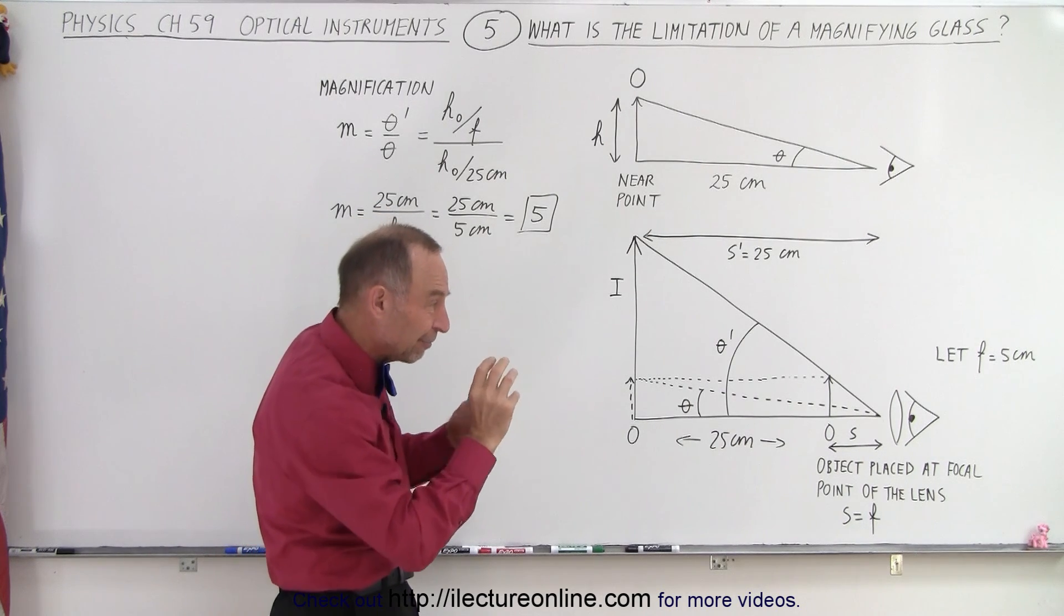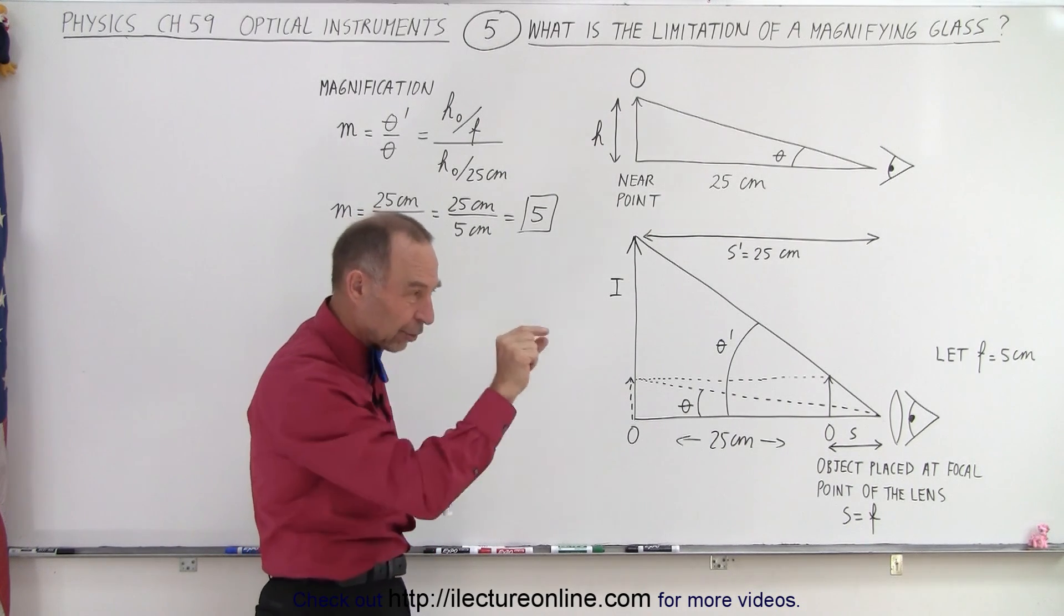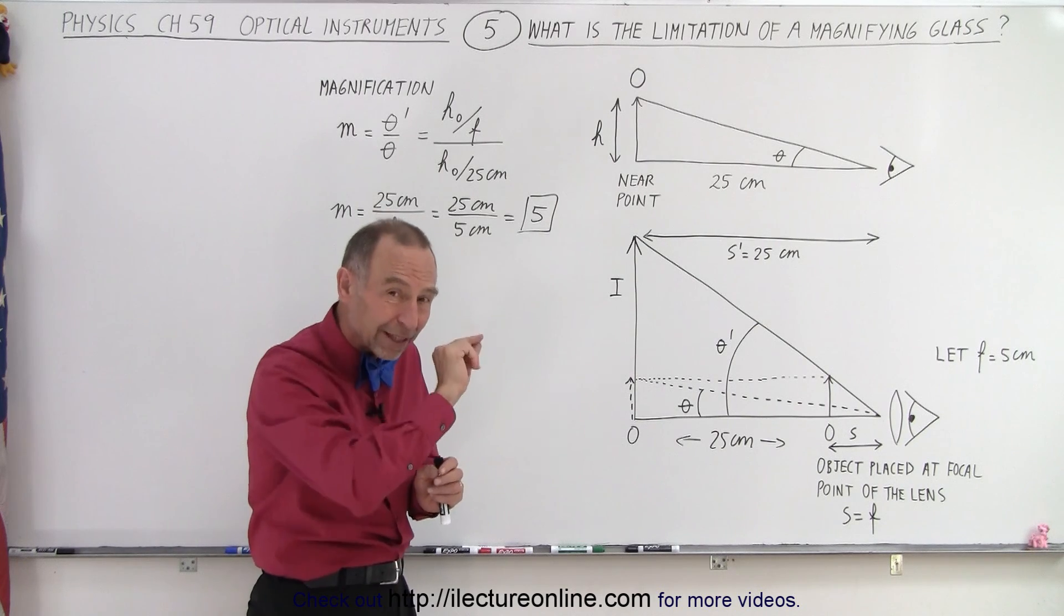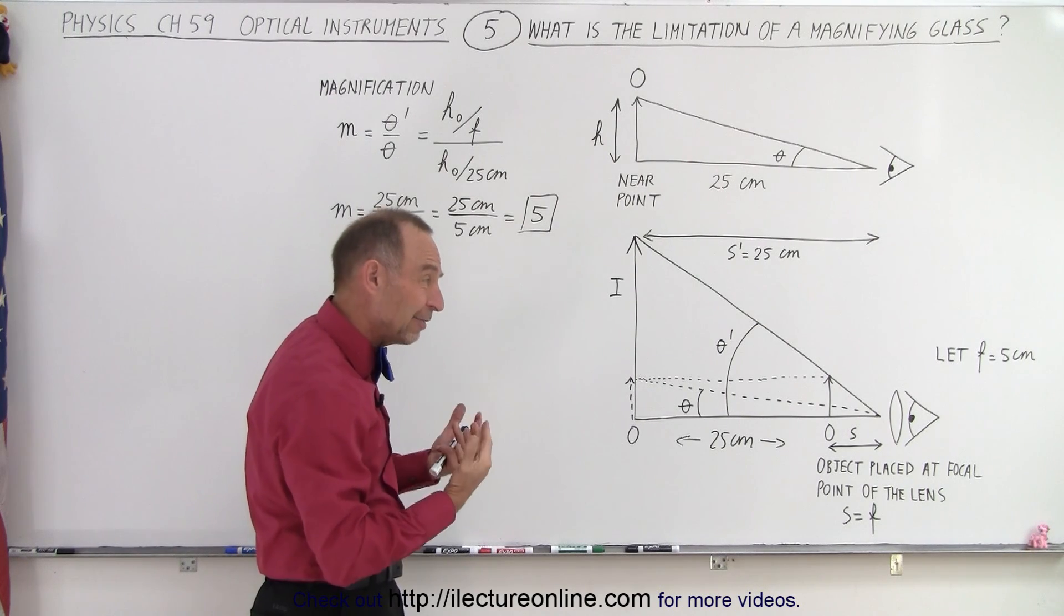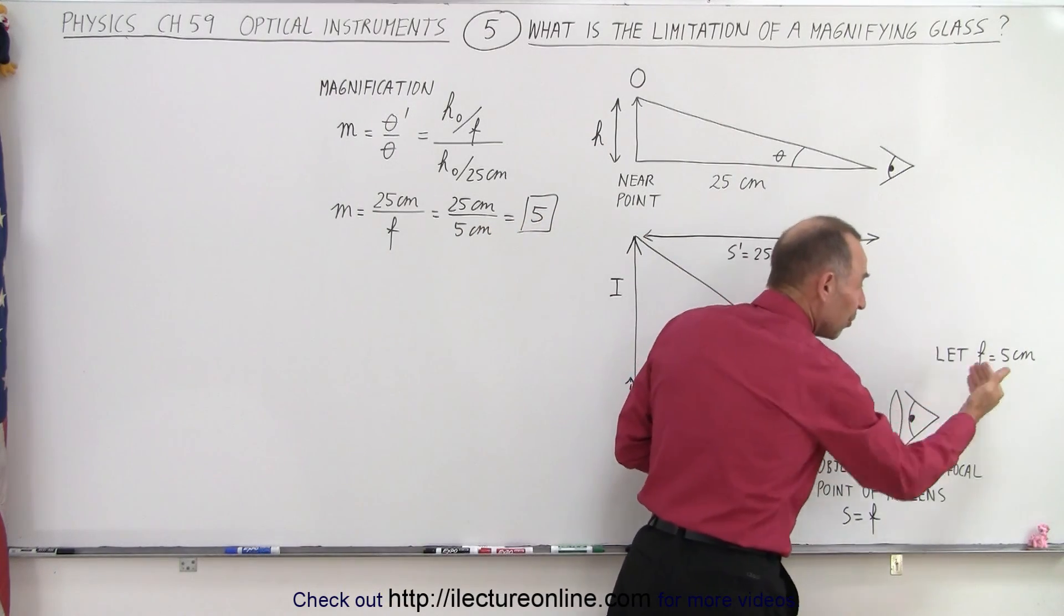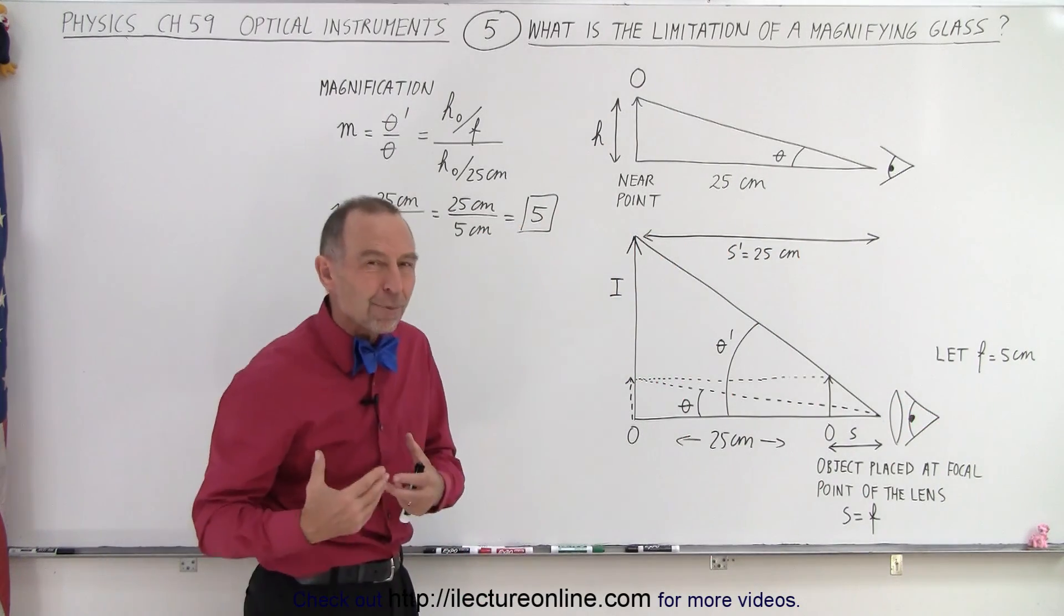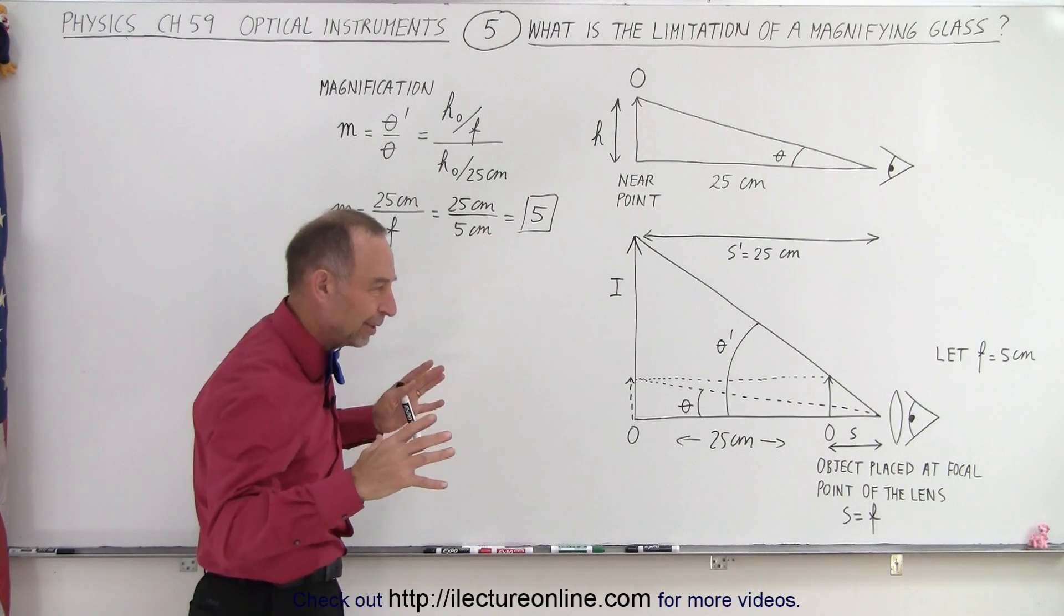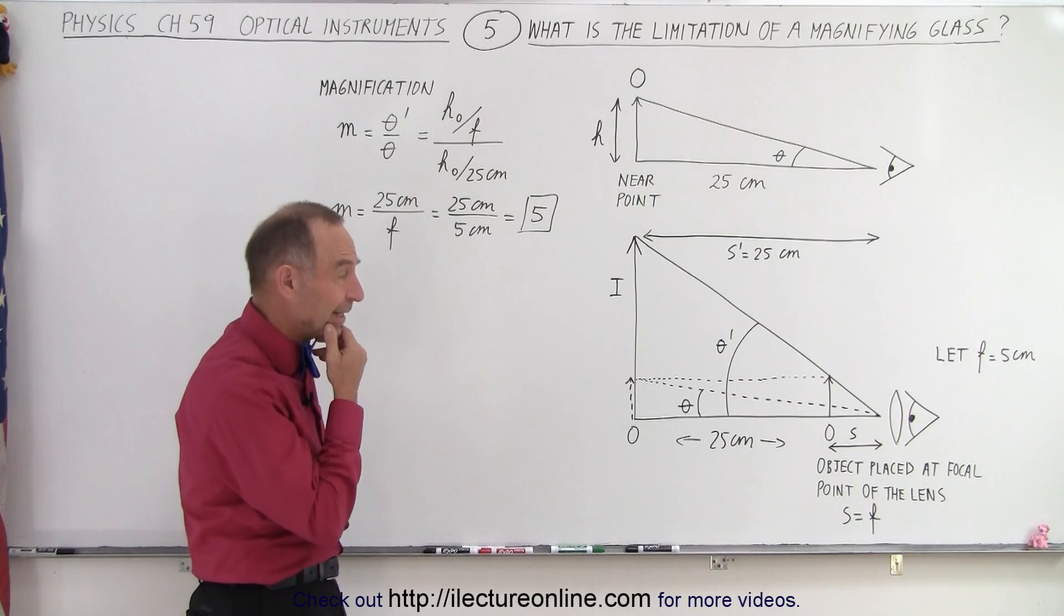Things become very blurry very easily. There's only one little spot then at that point where things are clear. And so magnifying glasses have that limit where you can't have the focal length much smaller than 5 centimeters and still be practical. So that's where your limitation is going to be with the magnifying glass.